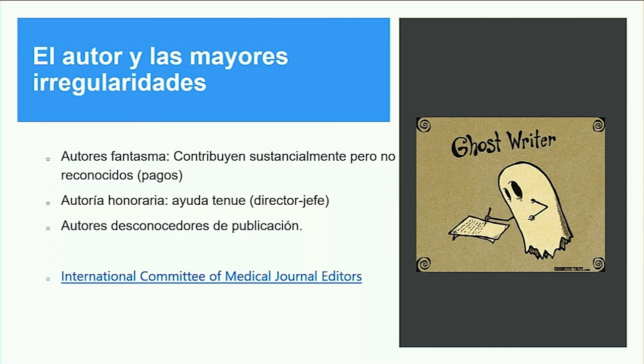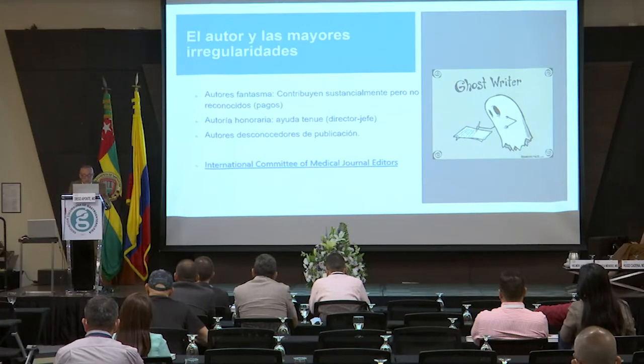Hay algunas fallas muy grandes que cometemos a veces como autores. Existen los autores fantasmas: son aquellos que contribuyen sustancialmente pero no son reconocidos; por ejemplo, se le paga a alguien para que escriba o haga cambios en el artículo, pero no hacen parte de la autoría. Otros son los autores honorarios: muy común cuando el director, el jefe del servicio o algún médico reconocido hace parte de la autoría a pesar de no haber trabajado en el artículo, debido a que esto puede dar más impacto. También están los autores desconocedores de publicación: yo te publico, tú me publicas, pero ni siquiera sé que he sido citado o he revisado el artículo al cual voy a salir como autor.